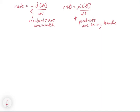Now let's look at a more complex reaction that involves some stoichiometry. Let's take a reaction where we have not just a one-to-one ratio: 2HI(g) → H₂(g) + I₂(g). Things are a little more complicated here because we're making two products and the ratio of these products is one-to-one. Whenever we make one molecule of H₂ we're going to make one molecule of I₂, and whenever we make one molecule of H₂ and one molecule of I₂ we're going to consume two molecules of HI.